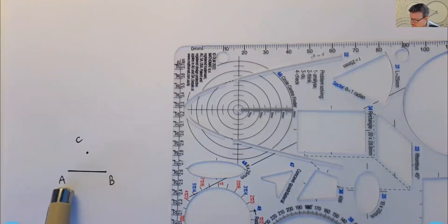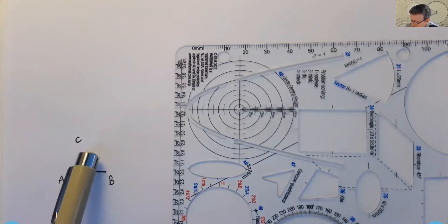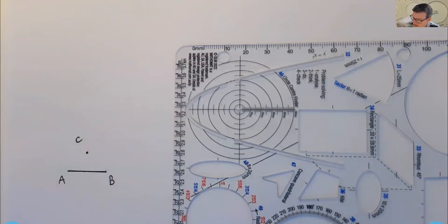We've got a line segment from A to B, and a given point C. And the challenge is to construct a line segment that has the same length as AB, and it emanates or begins at the point C.